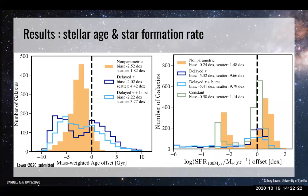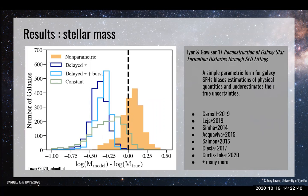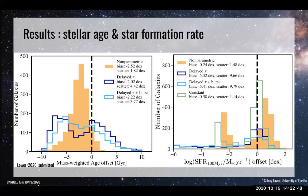Looking at stellar ages and star formation rate — something to highlight is that even though there's a systematic offset the parametric model imposes, perhaps we could correct for it. But your ages and star formation rates will be off as well. The parametric models cannot simultaneously infer stellar mass, stellar age, and star formation rate as well as the non-parametric. We are systematically underestimating the stellar age, and there is a bimodal distribution where a significant chunk of galaxies also have an underestimated star formation rate.